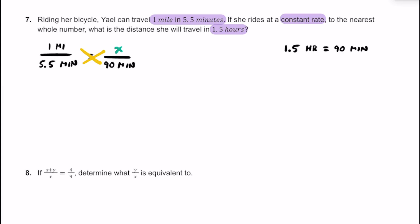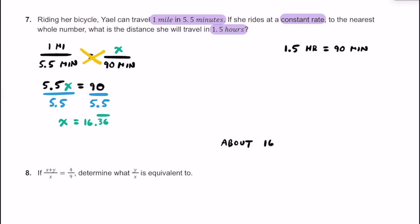Using cross products: 5.5 times x equals 1 times 90, so 5.5x equals 90. Dividing both sides by 5.5, we get x equals approximately 16.36 repeating. Rounded to the nearest whole number, that's about 16 miles. So if Yao can bike one mile in five and a half minutes at a constant rate, with 90 minutes she'd travel about 16 miles.